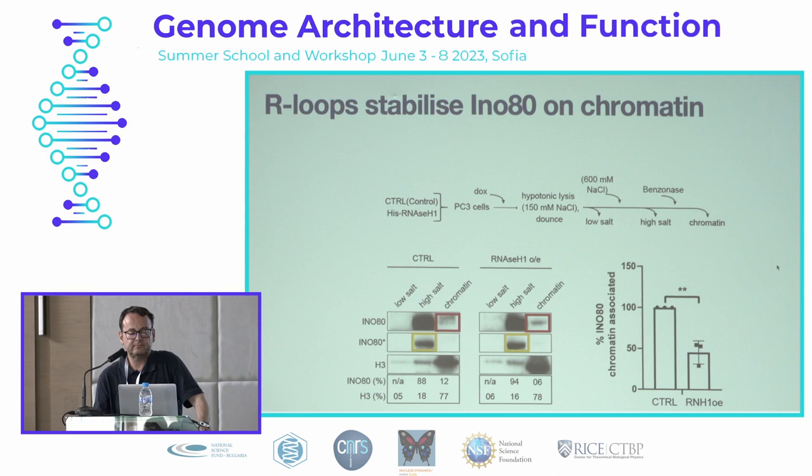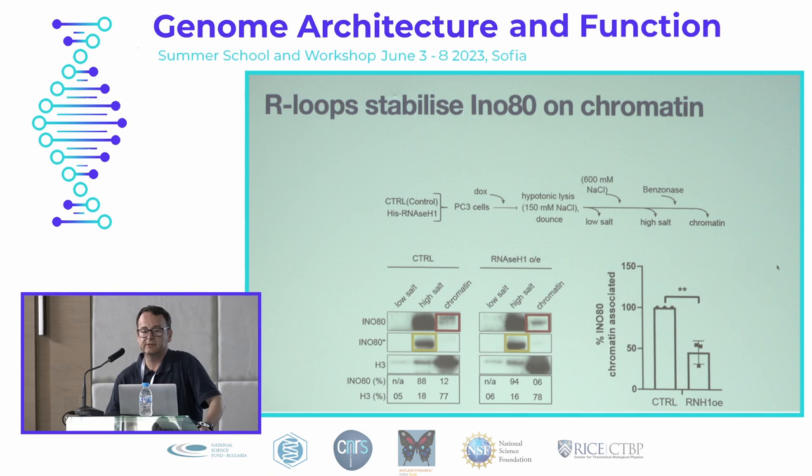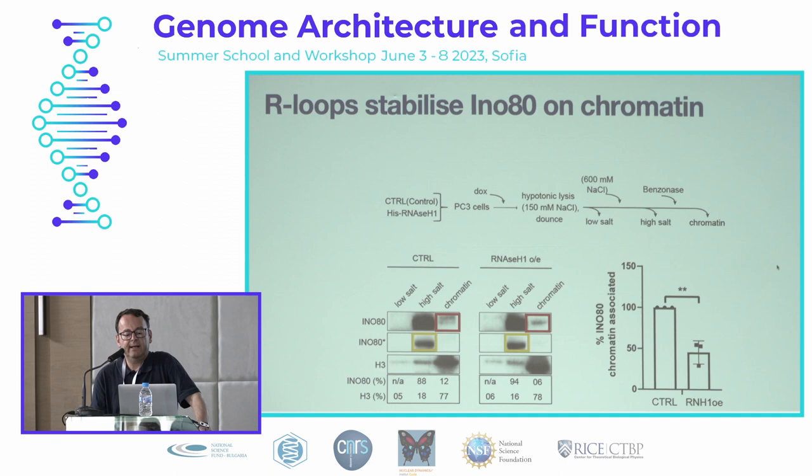Next we did salt fractionation of cells with and without overexpression of RNase H1, and observed that upon overexpression of RNase H1, there is an increase in the high-salt fraction of INO80 and a decrease in the chromatin-bound fraction, which suggests that R-loops stabilize INO80 on chromatin.